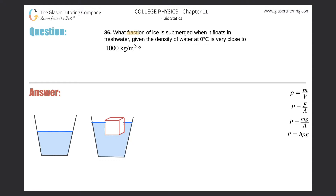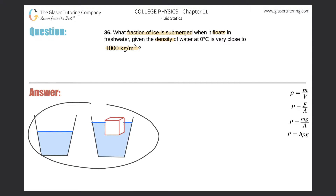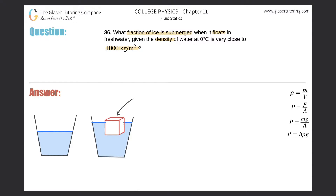Number 36. What fraction of ice is submerged when it floats in freshwater, given the density of freshwater at zero degrees Celsius is very close to 1,000 kilograms per cubic meter? We know from everyday experience that ice floats in water.